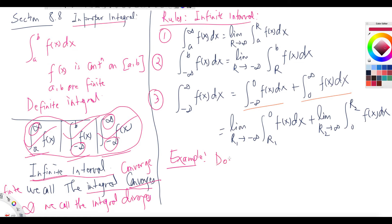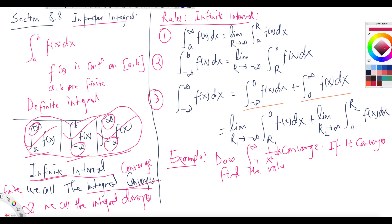Example: Does the integral from 1 to infinity of 1 over x squared dx converge? If it converges, find the value. Basically it is asking for the area under the curve 1 over x² between 1 and infinity. If you draw the graph it is decreasing, so I assume the area will be finite. We'll find out how much that is.